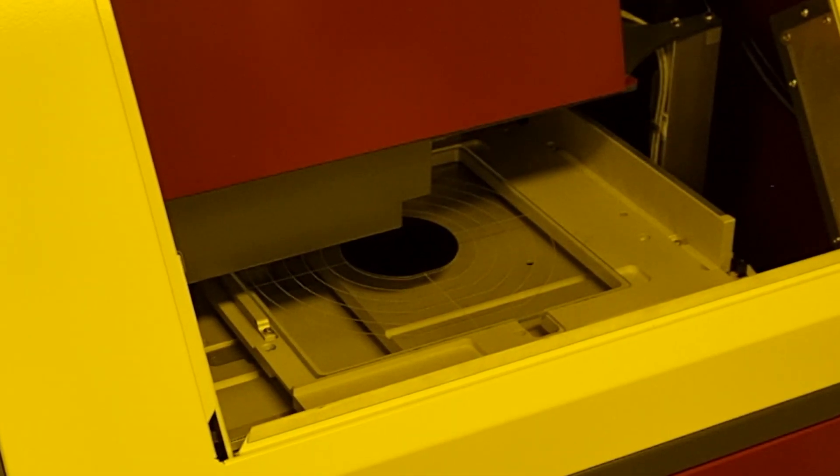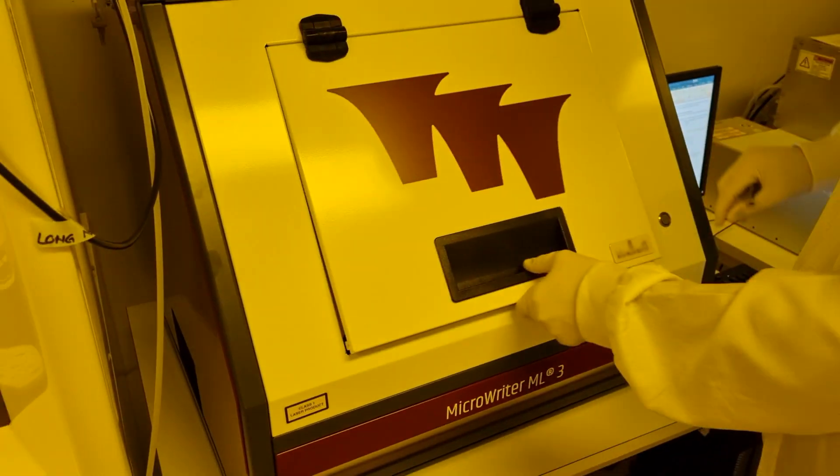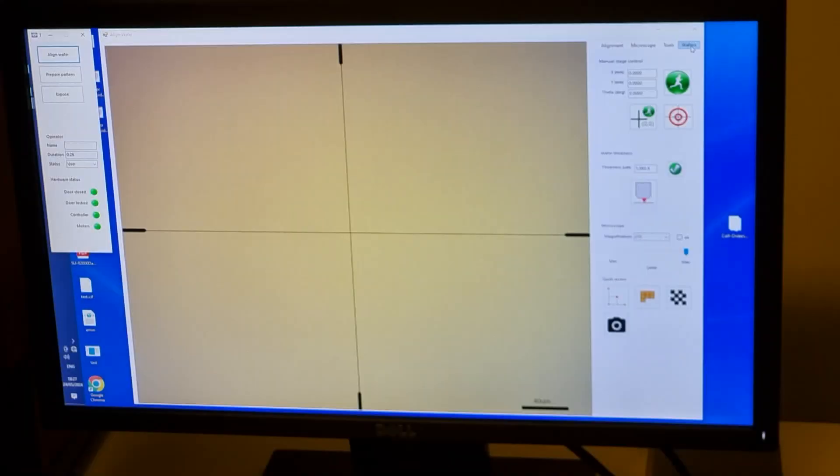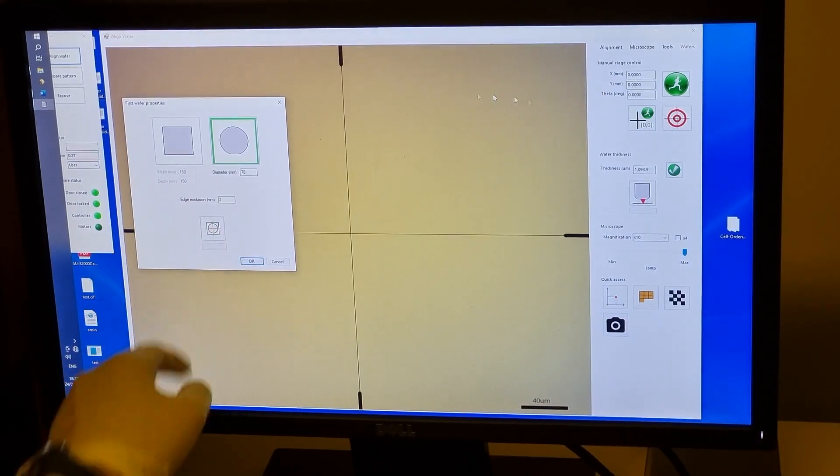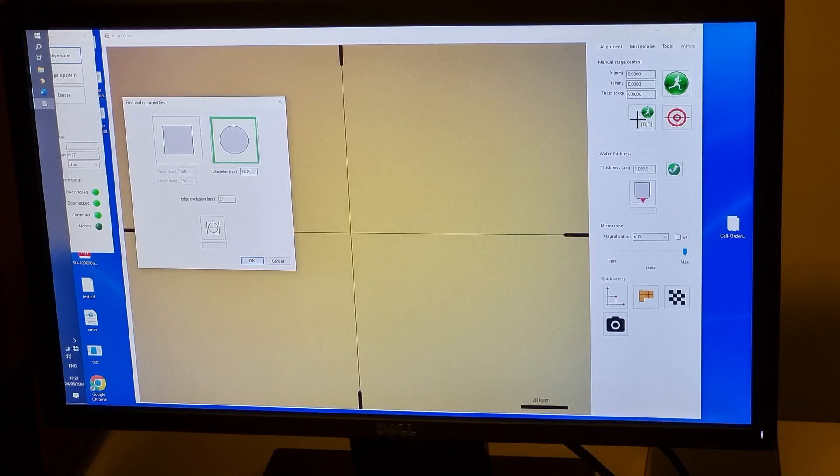Load the wafer in the center of the Durham MagnetoOptics ML3, then close and lock the lid. In the DMO software, the first window is Align Wafer. Under the Wafers tab in the top right, we define the substrate. Our substrate is a 76.2 mm or 3 inch circular wafer.